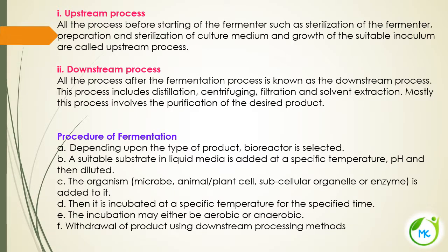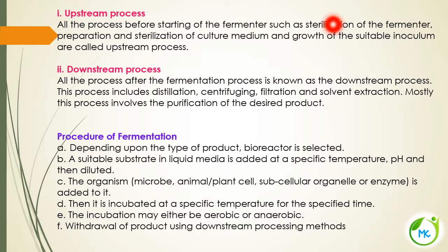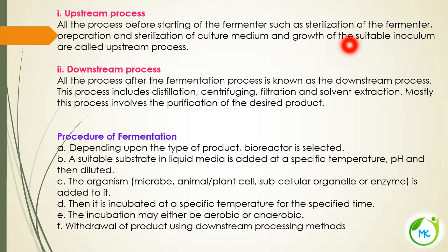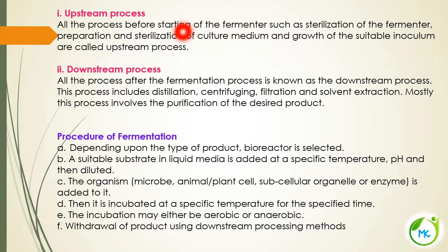The upstream process includes all the processes before the starting of the fermenter. First, we sterilize the fermenter — that is, the vessel or bioreactor. After sterilizing it, we prepare and sterilize the culture medium that we are going to add to the fermenter. We also grow the suitable inoculum that we are going to inoculate into the culture medium and keep it ready. All the processes before the starting of the fermenter are called upstream process.